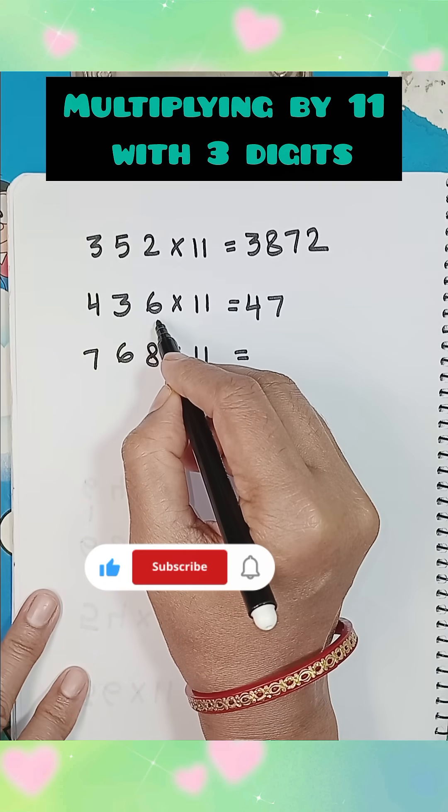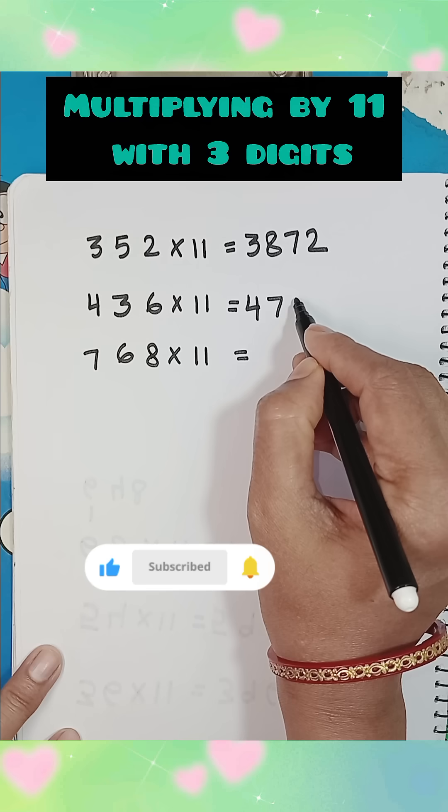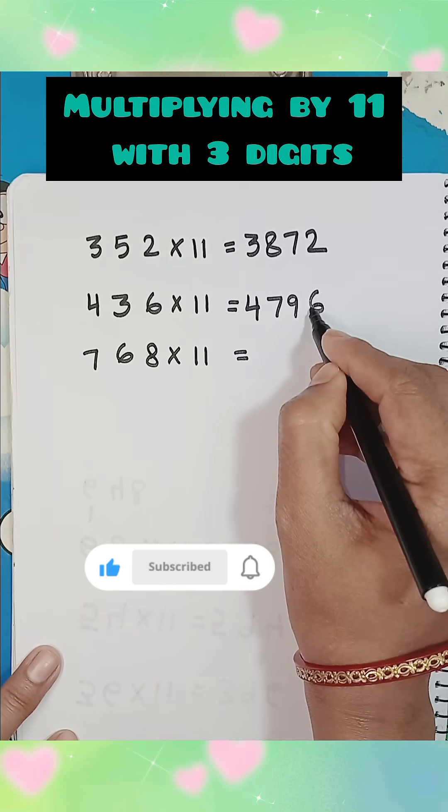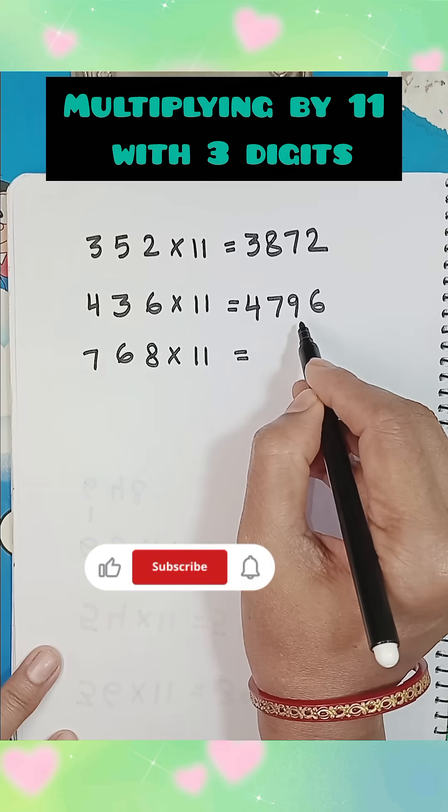Now add 2nd and 3rd digit, it will be 3 plus 6, 9, write the last digit, 4796.